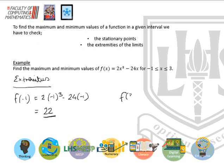f of 3 is 2 times 3 cubed, minus 24 times 3. 3 cubed is 27 times 2 is 54, take away 72 is negative 18.